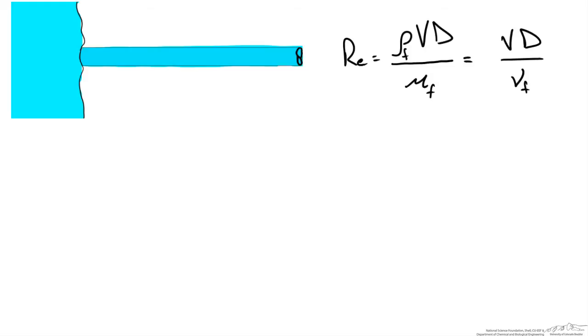From our problem statement we're given a diameter of 4 inches and a flow rate Q of 50 gallons per minute. We know based on volumetric flow and the cross-sectional area of the pipe we could calculate the average velocity. We're given the diameter, so the only thing we need to look up for water is the density and the viscosity or kinematic viscosity.